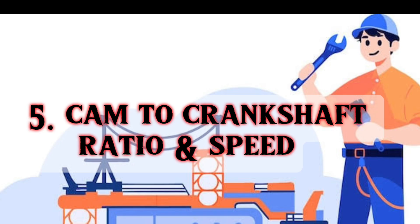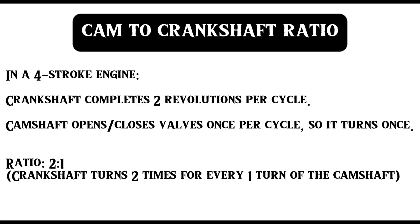Fifth question: Cam to crankshaft ratio and speed. In a four-stroke engine, the crankshaft completes two revolutions per cycle, while the camshaft opens or closes valves once per cycle, so it turns once. Therefore, the crankshaft turns two times for every one turn of the camshaft — the ratio is 2:1.